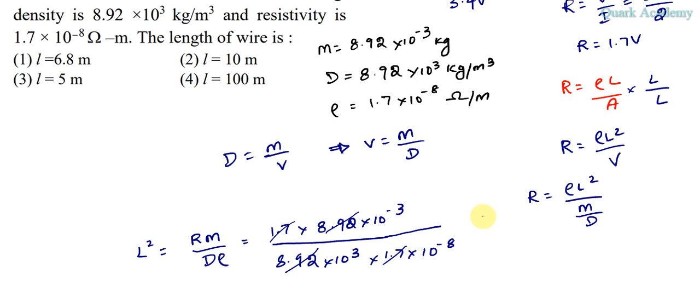1.7 and 1.7 cancel, 8.92 and 8.92 cancel, and we get 10². So L² = 10², which means L = 10 meters.